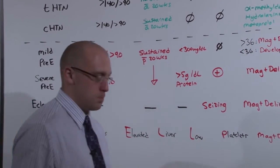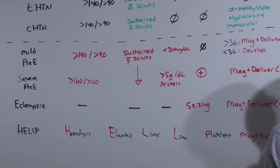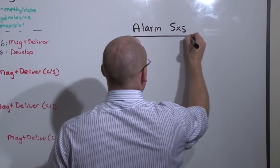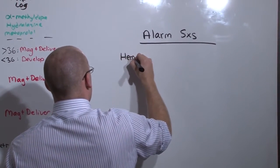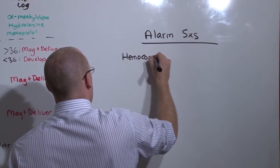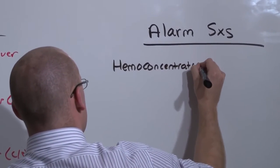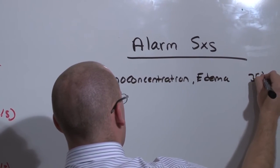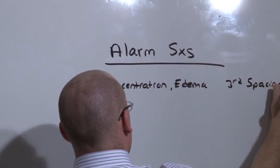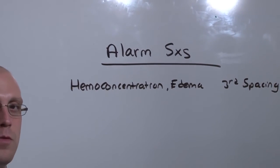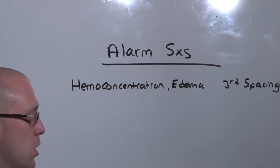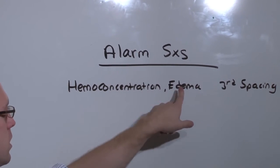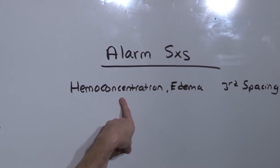First, you may be checking routine labs. If you see hemoconcentration, especially in the presence of edema, that is a sign of third spacing. Remember, this patient is losing tons of protein through her urine. Protein holds your fluid in your blood vessels. So if all of the fluid that was in her blood ends up in her interstitium, all of a sudden it looks like she's got a higher hemoglobin.